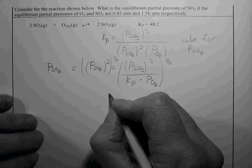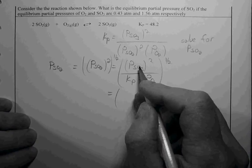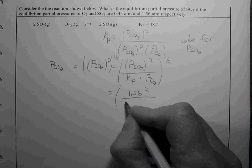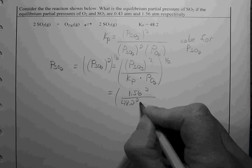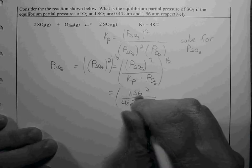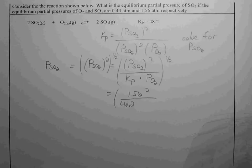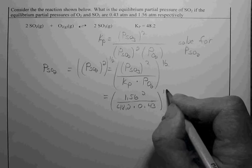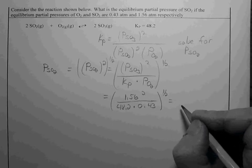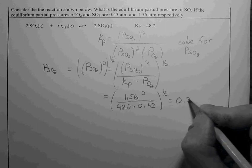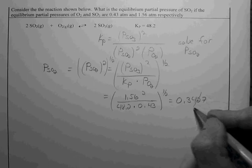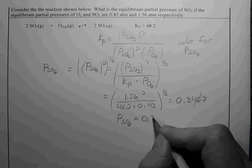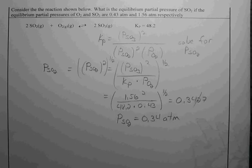Now we can substitute in our values for the pressure of SO3 and crunch it out. We get 0.3427, and rounding to two significant figures, the partial pressure of SO2 at equilibrium is 0.34 atmospheres. Thank you.